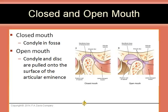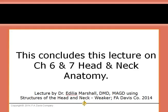These images show the position of the condyle in a closed and open mouth. When the mouth is closed, the condyle is located in the fossa. When the mouth is open, the condyle and disc are pulled onto the surface of the articular eminence. The articular disc is thick anteriorly and posteriorly, and this thickened posterior portion helps to stabilize the joint when the person is chewing on one side of their mouth. This concludes the lecture on chapters 6 and 7 of Head and Neck Anatomy.